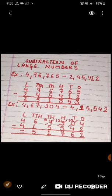Subtraction of large numbers. To subtract large numbers, we need to follow same steps as we do it to solve the small numbers. So here the first example is 4,096,765 minus 2,45,412. The first step, what we will do is, arrange the number as per the place value chart. Here you can see, we have arranged the numbers in the place value chart.